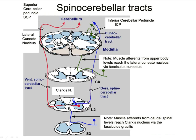This drawing has three of the spinal cerebellar tracts on it: a cuneocerebellar tract, which we haven't talked about yet, but which is really just the rostral extension of the dorsal spinal cerebellar tract. Let's first look at the dorsal spinal cerebellar tract.